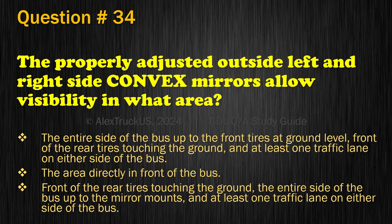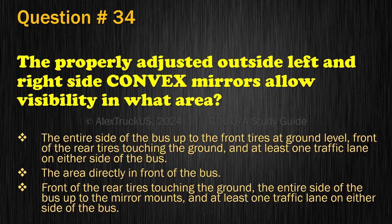Question 34. The properly adjusted outside left and right side convex mirrors allow visibility in what area? The entire side of the bus up to the front tires at ground level, front of the rear tires touching the ground, and at least one traffic lane on either side of the bus; The area directly in front of the bus; or Front of the rear tires touching the ground, the entire side of the bus up to the mirror mounts, and at least one traffic lane on either side of the bus. The correct answer is: Front of the rear tires touching the ground, the entire side of the bus up to the mirror mounts, and at least one traffic lane on either side of the bus.